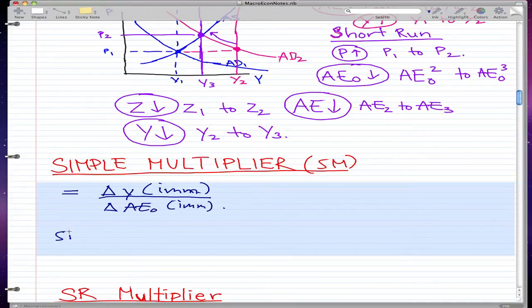And this makes simple multiplier. We could expand these two changes to y2 minus y1 over AE not 2 minus AE not 1. And that is the change for simple multiplier.